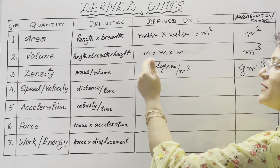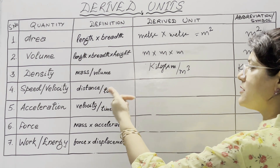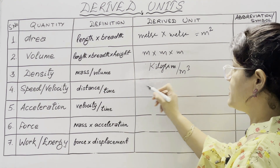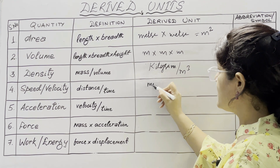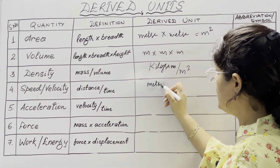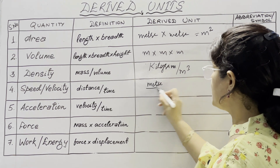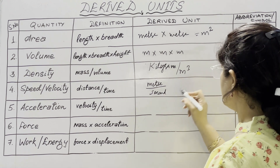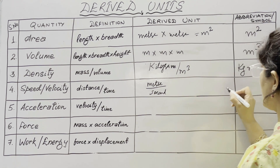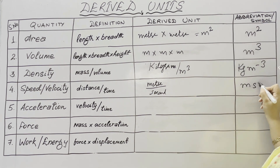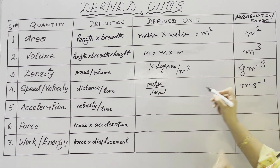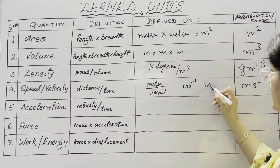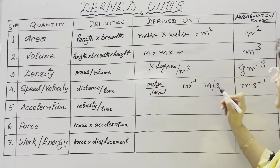Speed or velocity is defined as distance covered per unit time. The SI unit of distance is meter and the SI unit of time is second, so the unit of speed or velocity is meter per second. You can write it as m/s or m s⁻¹.